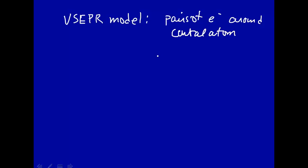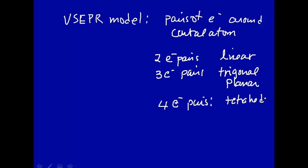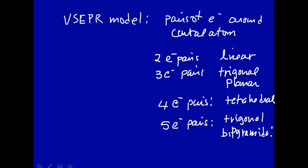If you have two electron pairs, those electron pairs are arranged in a linear fashion — you put them on opposite sides of a sphere to give minimum repulsion, giving a linear molecule. Three electron pairs gives a trigonal planar structure. Four electron pairs gives a tetrahedral structure. Five electron pairs gives a trigonal bipyramidal structure, and six electron pairs gives an octahedral structure.